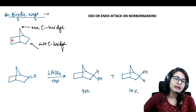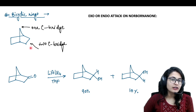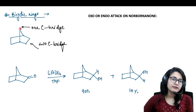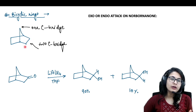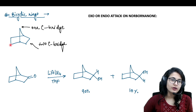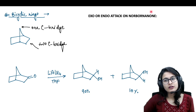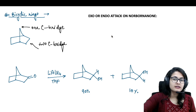First you need to understand that this kind of bicyclic ring is a norbornene system. This bicyclic ring is going to have one carbon bridge on the top and a two-carbon bridge on each side. When we are talking about the norbornone system, this is your norbornone system.